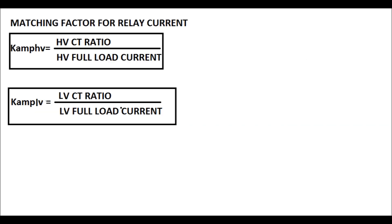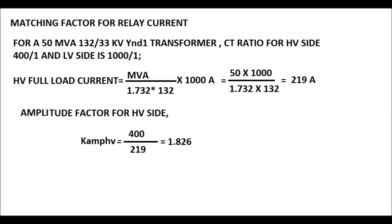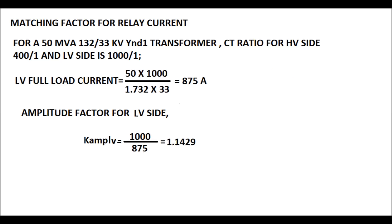The matching factors for relay current are: for the HV side, Kamp_HV equals the HV CT ratio divided by the HV full load current; for the LV side, Kamp_LV equals the LV CT ratio divided by the LV full load current. For example, for a 50MVA, 132/33kV power transformer, the CT ratio for the HV side is 400/1 and the LV side is 1000/1. The HV full load current is 219A. Therefore, the amplitude matching factor for the HV side is Kamp_HV = 400/219, which equals 1.826. The matching factor for the LV side is Kamp_LV = 1000/875, which equals 1.1429.